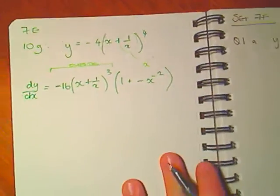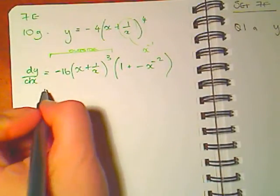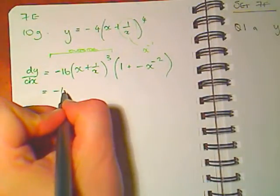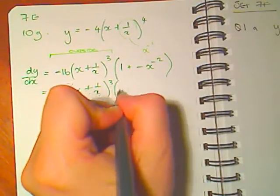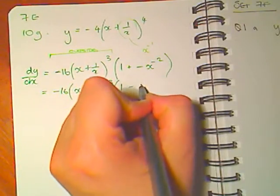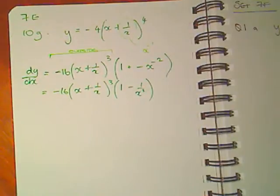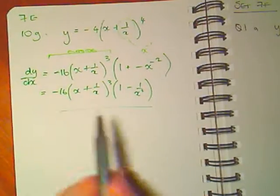So now we need to tidy this up just a little bit. We're going to have minus 16, x plus 1 on x cubed, times 1, minus 1 on x squared. Done. That will do for now.